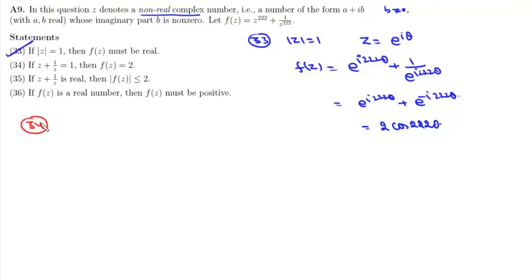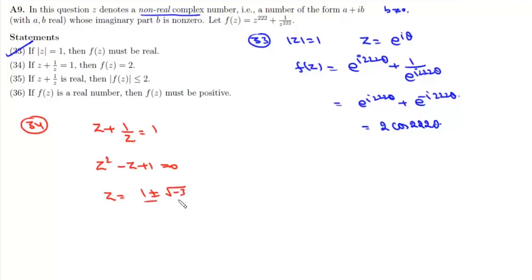In statement 34, z + 1/z = 1. We can rewrite this as z² - z + 1 = 0, giving z = (1 ± √(-3))/2, which simplifies to -ω and -ω², where ω and ω² are the non-real complex cube roots of unity.